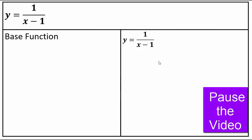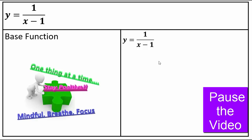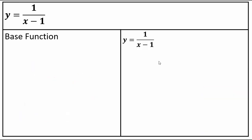Pause the video and try. Take a deep breath — one thing at a time. Identify the base function first and continue from there. The base function here is 1 over x, because in the denominator you have x minus 1 — if you remove that transformation, you see it's 1/x. So the base function looks like the standard 1/x graph.